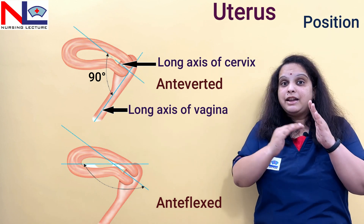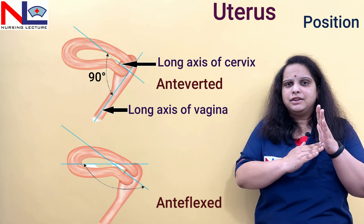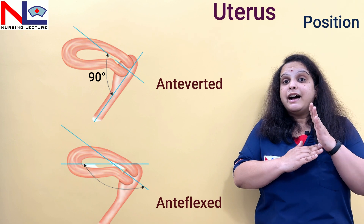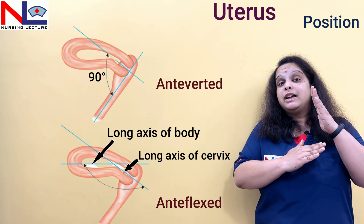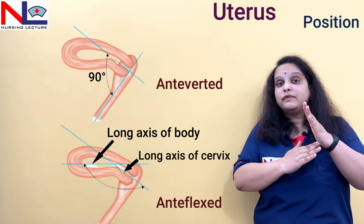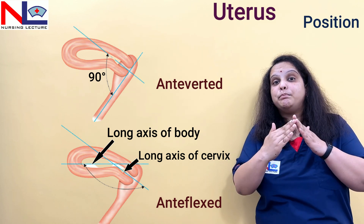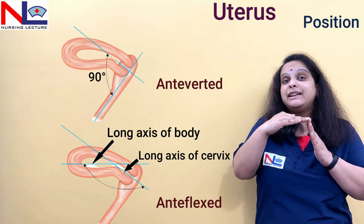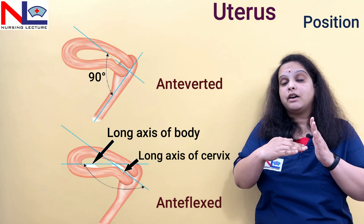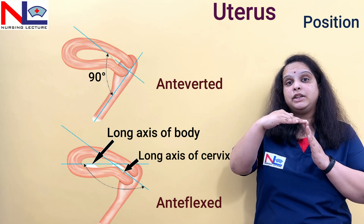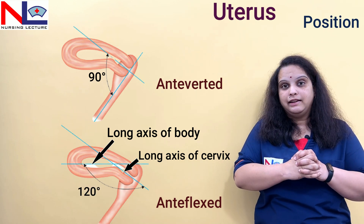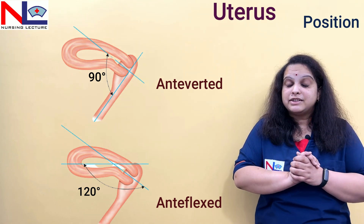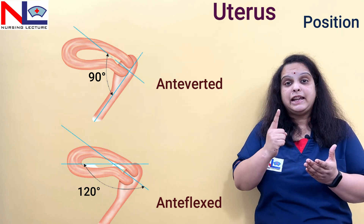A helpful trick: 'V' means vagina and 'V' means anteverted — this is a trick to learn easily where anteversion is created. Antiflexion means again there is an angulation, because the long axis of the body again bends forward, leaning toward the bladder. The angulation between the long axis of the cervix and the long axis of the body of the uterus creates a 120-degree angle, and this angulation is termed antiflexion. So the normal position is anteverted and antiflexed.